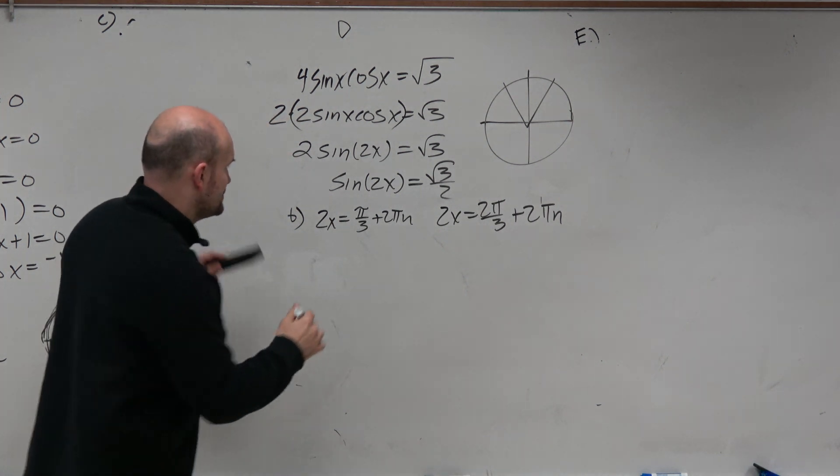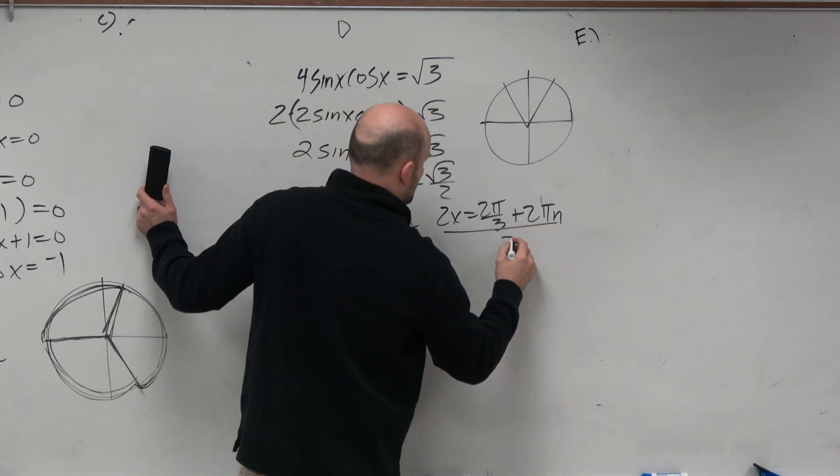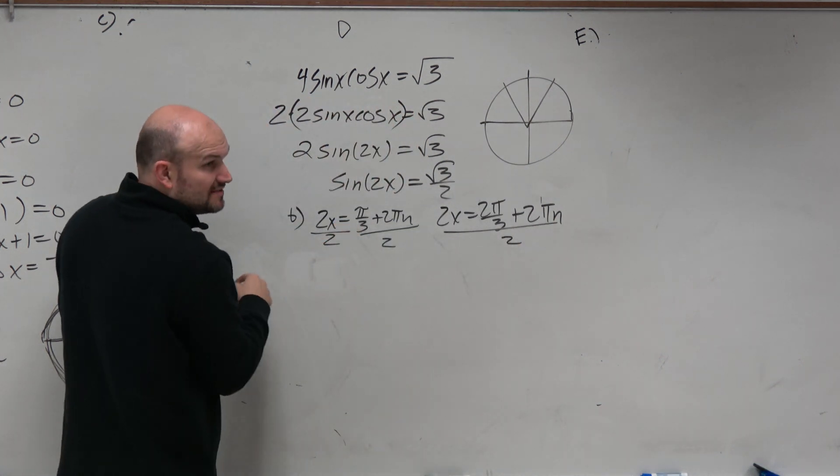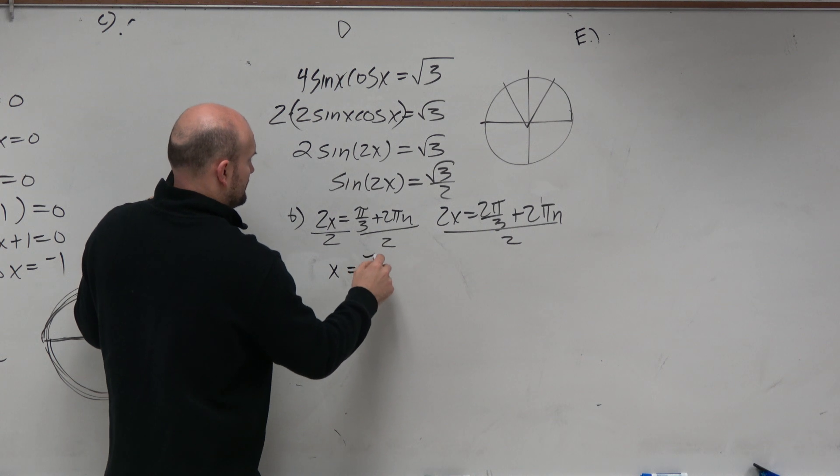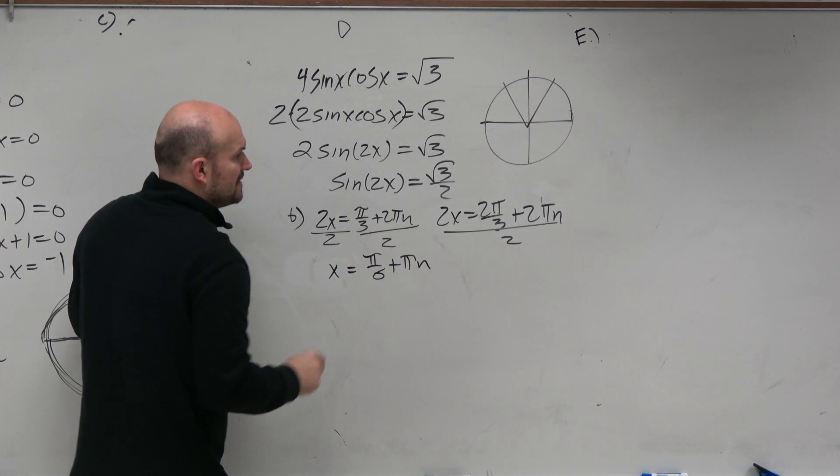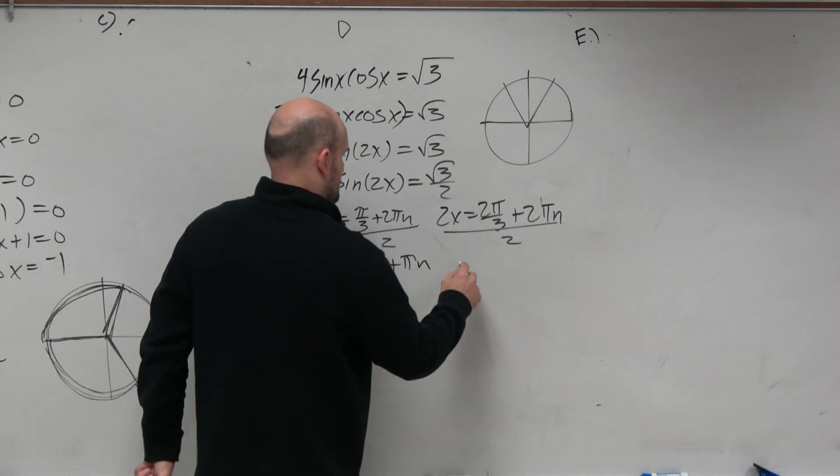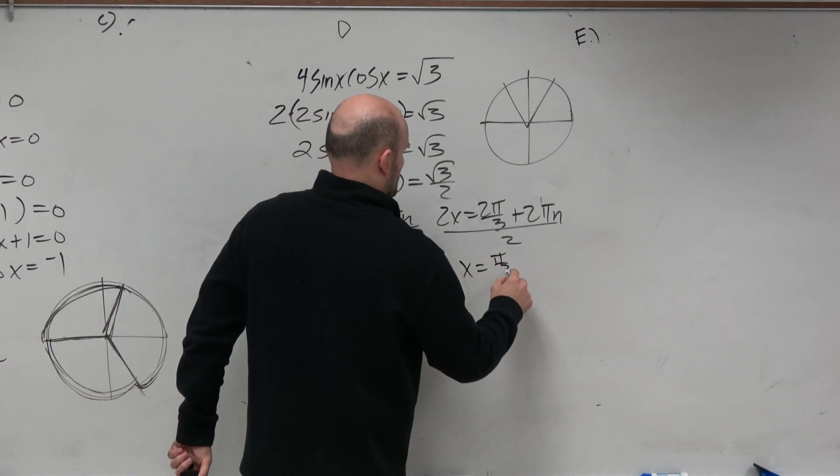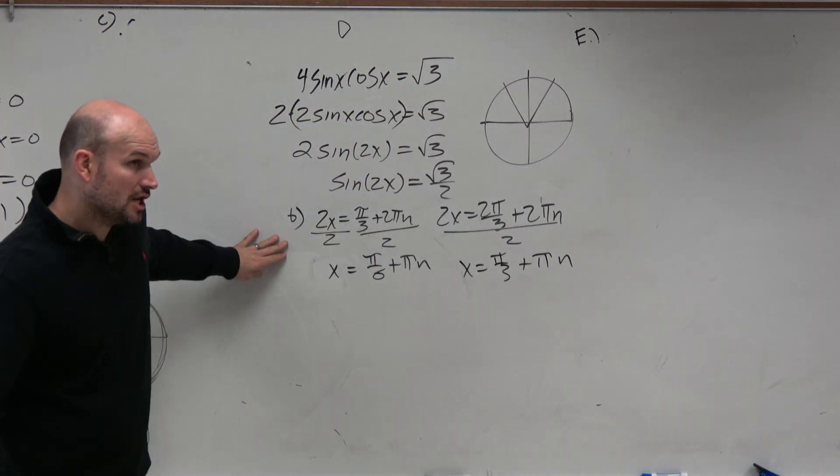Now all we've got to do is just solve for x. So remember guys, dividing by 2 is the same thing as multiplying by 1 half. So therefore this becomes π over 6 plus πn, and then this becomes 2π over 6 which is π thirds. So that is all of the solutions.